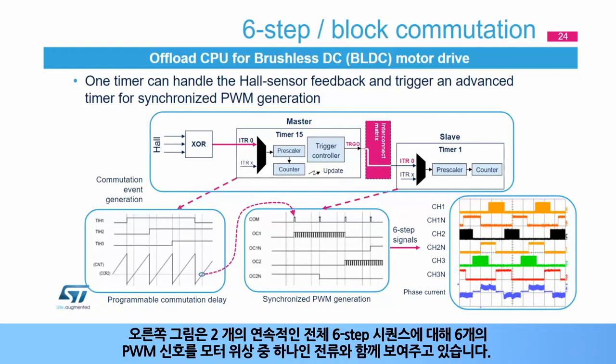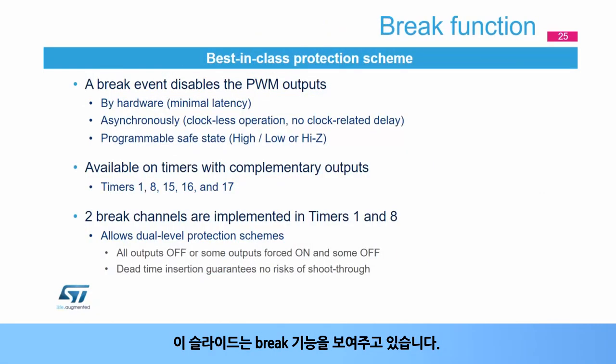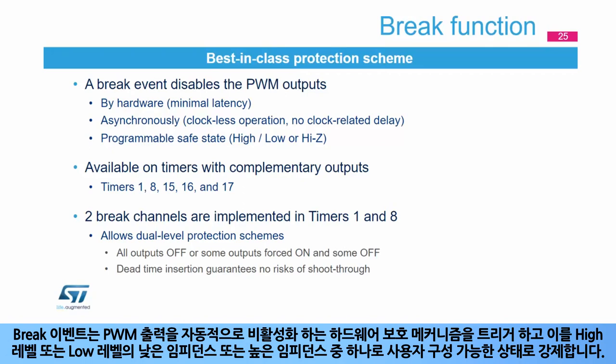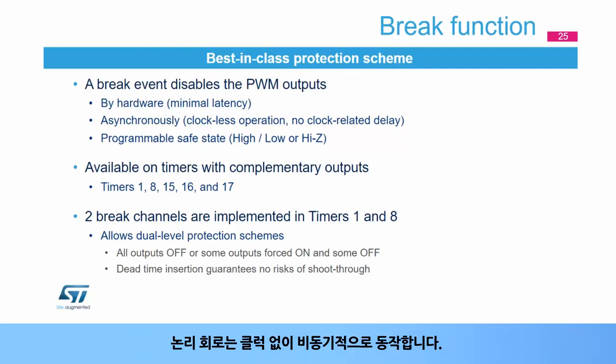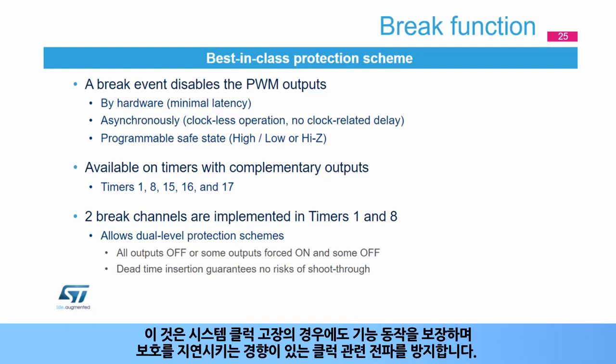The figure on the right shows the six PWM signals for two consecutive complete six-step sequences, together with the current in one of the motor phases. A break event triggers a hardware protection mechanism that automatically disables the PWM outputs and forces them to a user-configurable state: either low impedance with high or low level, or high impedance. The logic circuitry works asynchronously without any clock, guaranteeing functionality even in case of a system clock failure and avoiding any clock-related propagation delay.